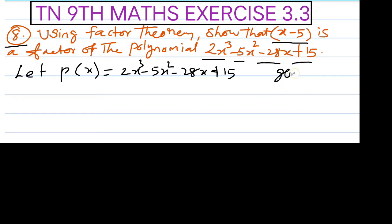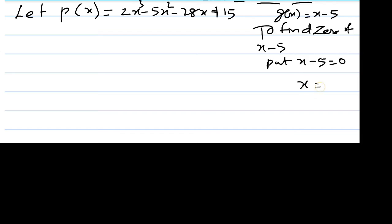And g(x) equal x minus 5. To find the zero of x minus 5, put x minus 5 equal to 0, then x equals 5.